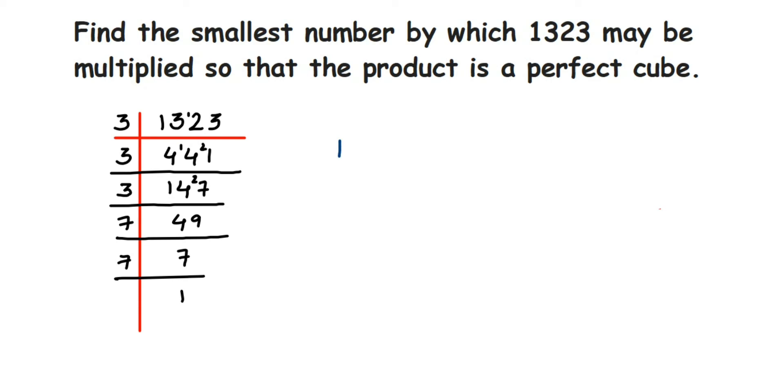Once we've done this, we'll rewrite it. Let's check the prime factors once. 1323 can be written as 3 × 3 × 3 × 7 × 7.